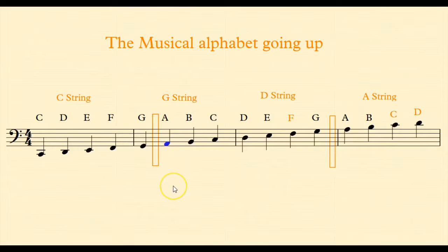Let's talk about the musical alphabet going up one note at a time. If I was on this note A right here I would go up to B C D E F G and then after the G I put this rectangle to show you that we have to go back to A B C and D.